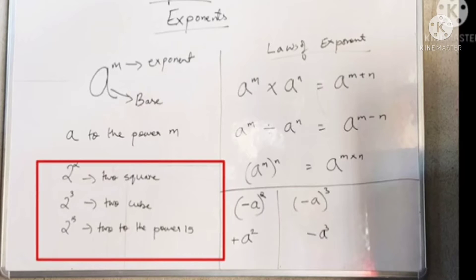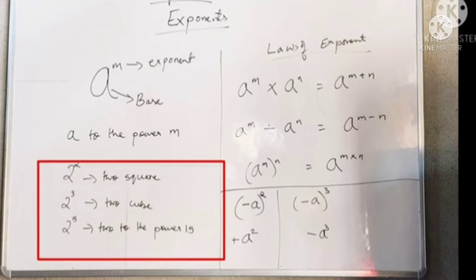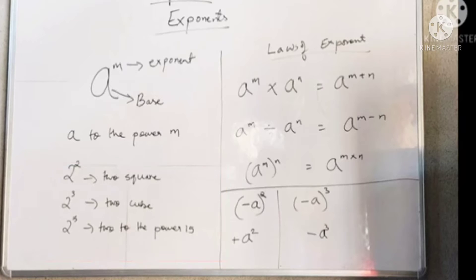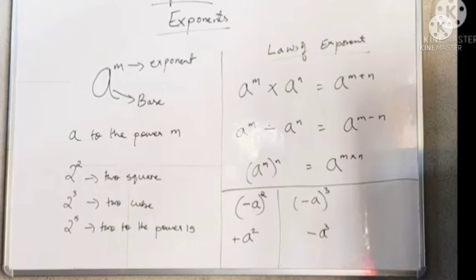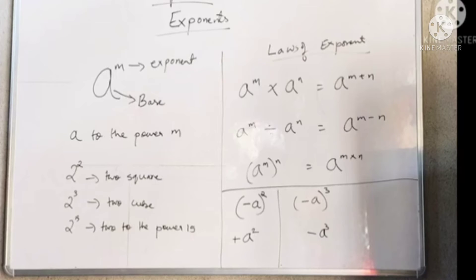You can see a few examples written here: two square, two cube, two to the power fifteen. If there is two or three, we read it as square or cube. If there is more than three, we read it as a power. So we have base and exponent or power.